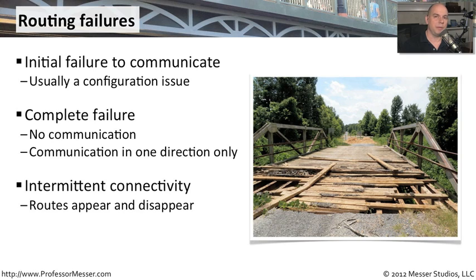We may find that sometimes we can connect to a site and other times we cannot, because our routing tables are constantly and dynamically updating themselves. If we're using static routing, our routes never change — we're simply sending the information out. And because we have no idea whether that route is seen by anyone else, we're hoping for the best. So we might see the traffic go all the way there during one part of the day and then suddenly have no communication to that site.